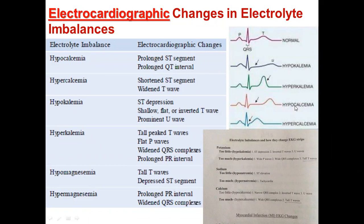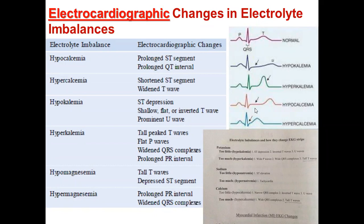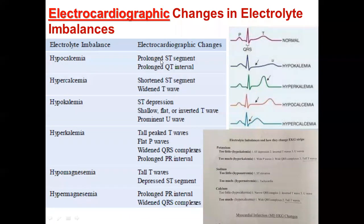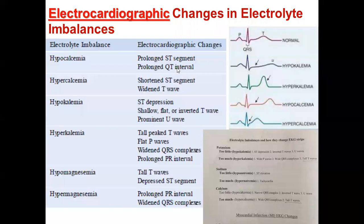In case of hypocalcemia — too little calcium — the QRS complex is narrow. There is also an inverted or flat T wave, and a U wave is visible. The key finding in hypocalcemia is a prolonged QT interval, along with narrow QRS complex, inverted T wave, and U wave.